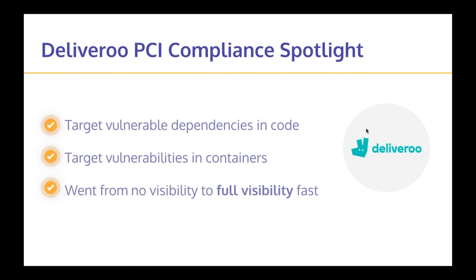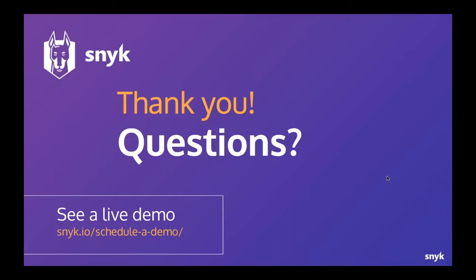A question from Abhishek: does Snyk also detect transient dependencies — for example, if library A depends on library B, would Snyk detect vulnerabilities in both? Yes — Snyk computes and calculates full dependency trees including both direct and indirect dependencies, analyzes those trees, and helps you visualize them as well.